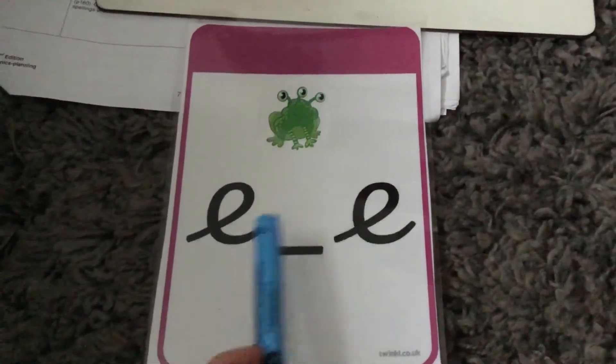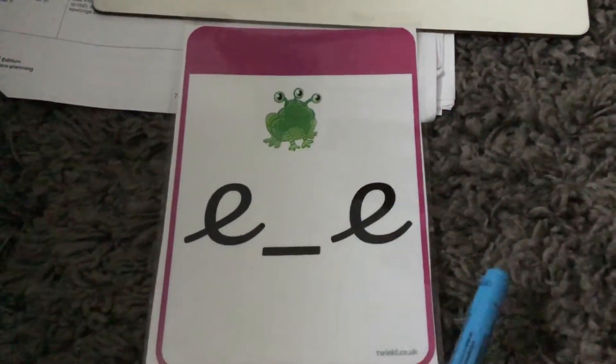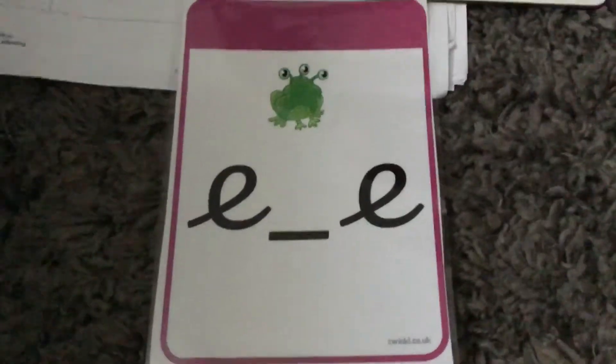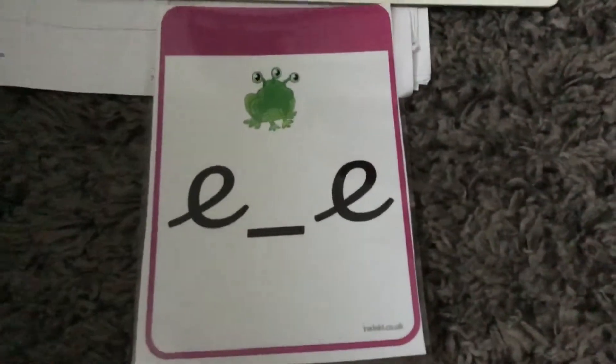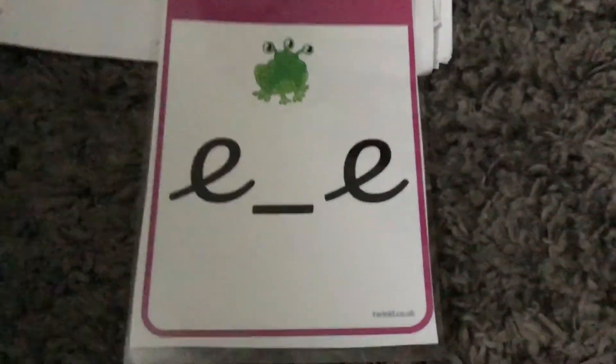But they've been split apart, haven't they? Because this is a split digraph. This is the E split digraph. So today we're learning the E split digraph.